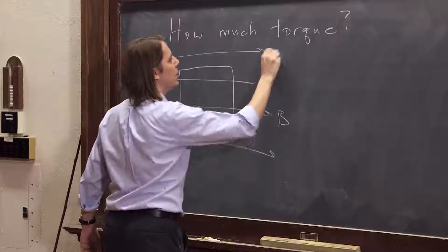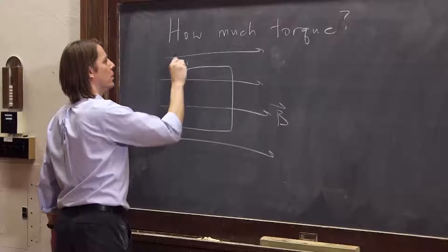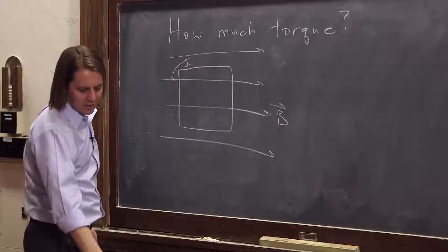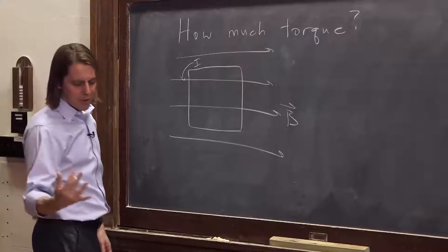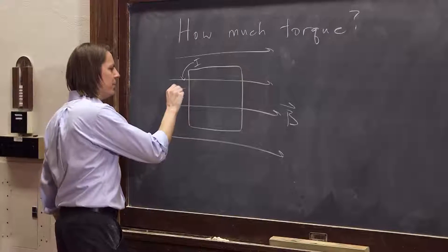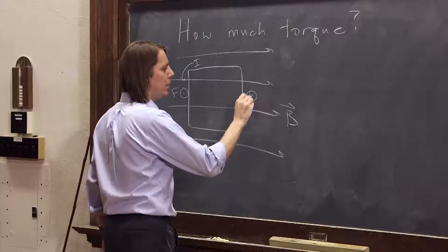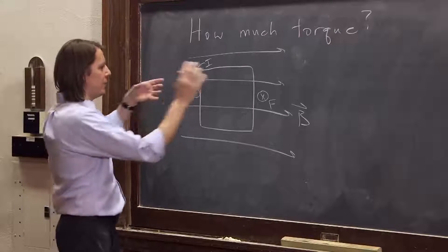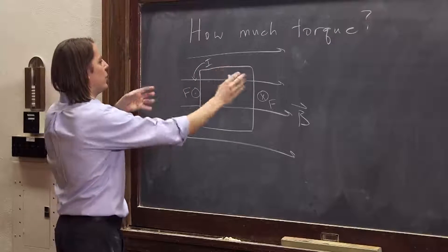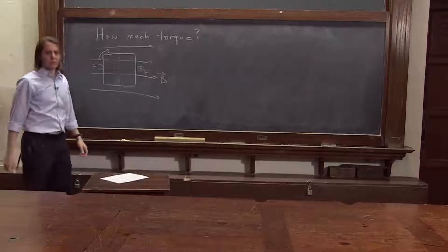So we have B going this way. We have the current going around the loop this way. Sides A and B, et cetera. We remember that when we calculated the force, this one had a force out, this one had a force, this side had a force in. So we know now it's going to spin. It's going to turn around that axis of rotation.